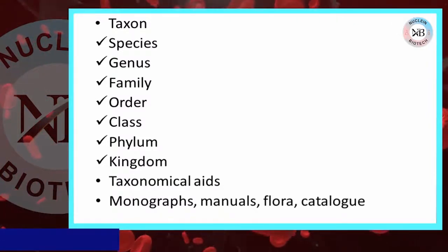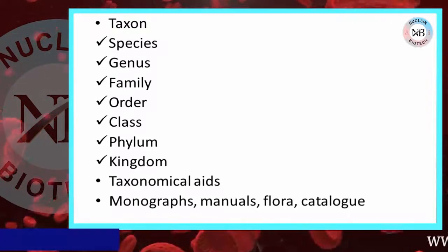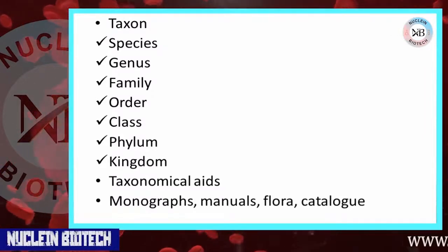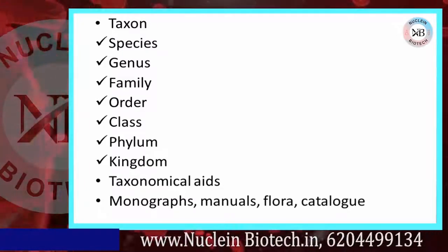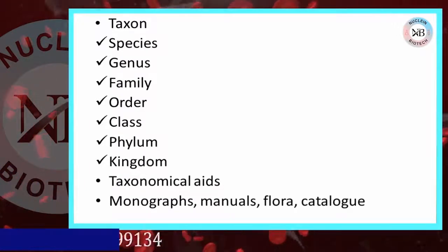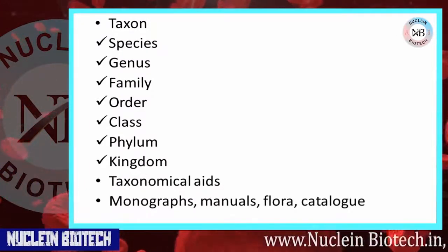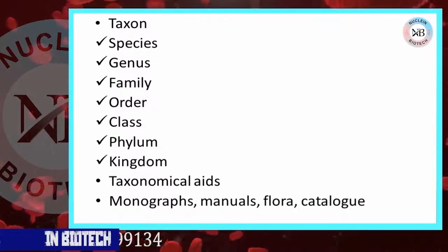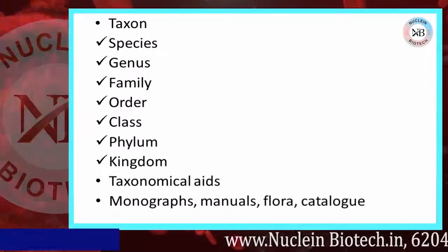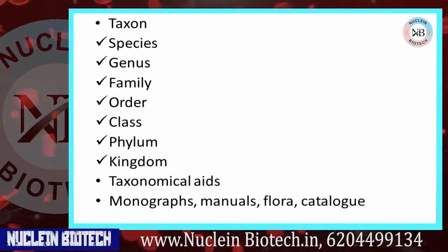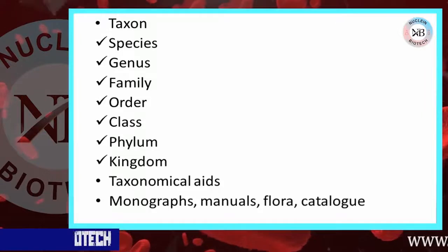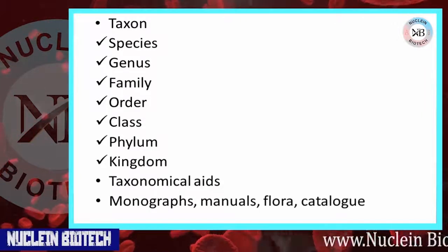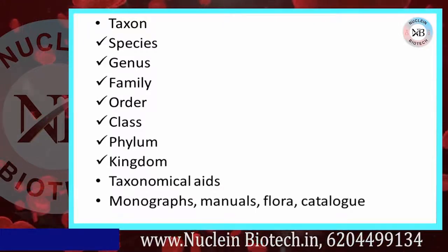In ascending order, the seven mandatory categories are: Kingdom, Division, Class, Order, Family, Genus, and Species. Kingdom includes different phyla of animals and different plant divisions. Division or phylum incorporates related classes. Class incorporates many related orders.